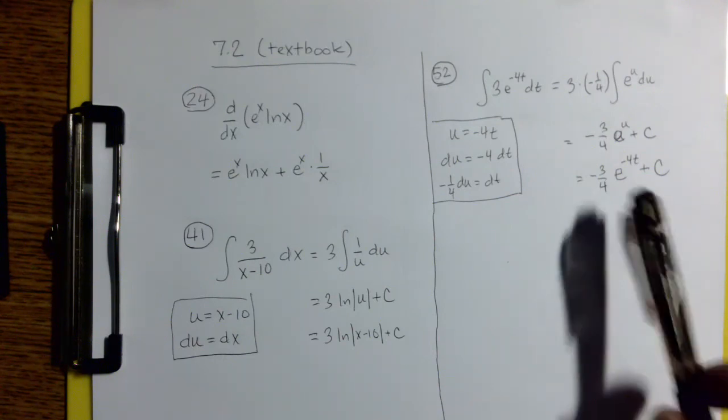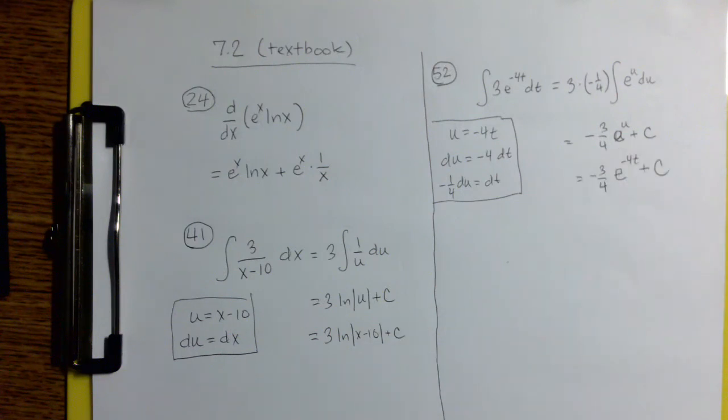And in this case, if we do that, we would use the chain rule and it would bring us back to what we started with. This substitution rule, by the way, that we're seeing here and here and that we first were introduced to in 5.5 really is the antiderivative version or sort of the reverse of the chain rule.